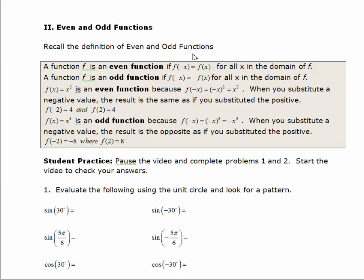We should first review the definition of an even function and an odd function. A function is even if f of negative x is equal to f of x for all x in the domain — so if you replace x with negative x and get the original expression back, you have an even function. A function is odd if f of negative x equals the opposite of f of x for all x in the domain, meaning when you replace x with negative x, you get the complete opposite of the original function.